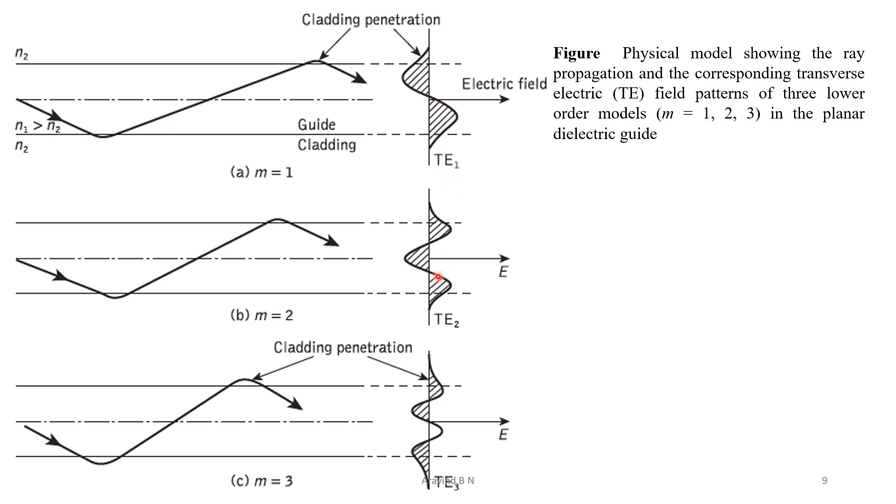Similarly, if there are two zero crossings, that can be observed here. This is 1 and this is 2. So, two zero crossings, therefore this is TE2. Similarly, for TE3, there are three zero crossings. So, that is why we are going to say this is of m is equal to 1, this is of m is equal to 2, this is of m is equal to 3.